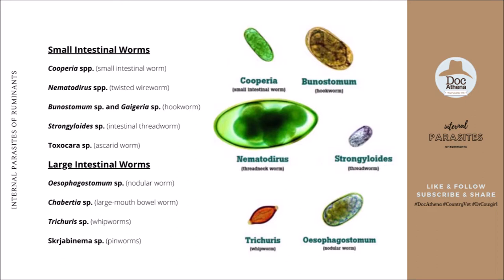Now let's look at the large intestinal worms. There's Oesophagostomum species or nodular worm, Chabertia species or large-mouthed bowel worm, Trichuris species or whipworms, and Skrjabinema species or pinworms. Our source provided limited photos of fecal eggs on the right. Thank you again, Intervet, for these photos. That's it for our small and large intestinal worms.